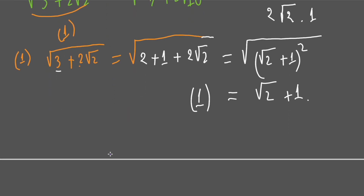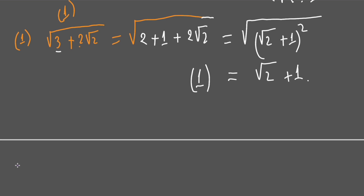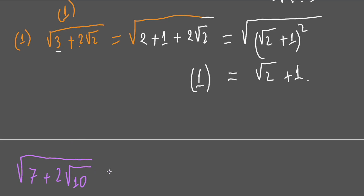Now move to the second expression. The second expression is a bit trickier than the first one: 7 plus 2 square root of 10. If we copy the same method as the first one, we cannot do it like that, because the number under the radical is 10, which is greater than 7. You cannot separate 7 into 2 positive numbers whose product is 10. So you need to think about another way.